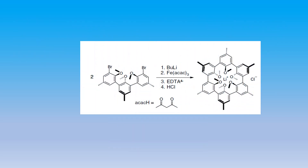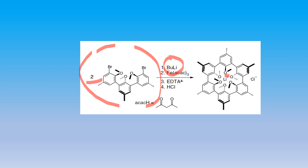This is a general method for the preparation of a lithium-host spherand. An open-chain structure is used and it is dimerized. Along with that, butyl lithium and acetylacetonate were used, and the lithium ion is accommodated in between the cavities.